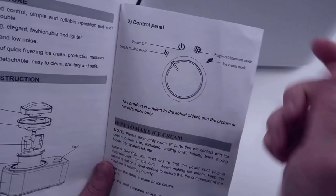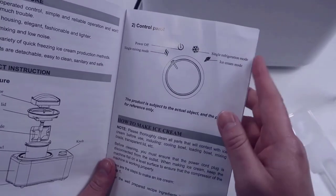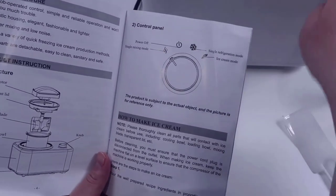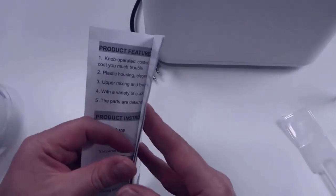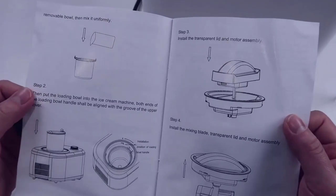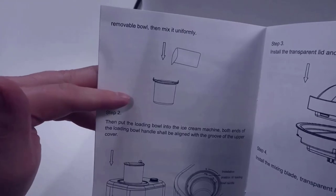You have what's called this single refrigeration mode, so that's this ice symbol. Then you have a single mixing mode as well as power off. Typically you'd be in power off if you want to keep this off, and then obviously we're going to the other modes as we're using it.